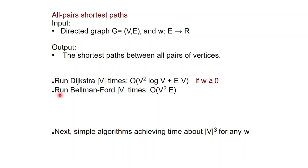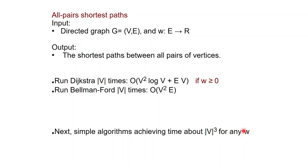Otherwise we can also run Bellman-Ford V times. This allows for arbitrary weight functions and the running time would be order of V squared E. These are possible solutions but are a bit cumbersome, and next we are going to give some simpler algorithms which achieve time about cubic in the number of vertices for any weight function.